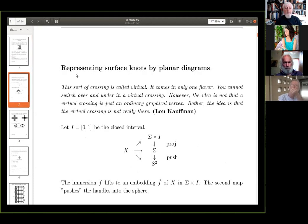Now, we can take a surface knot and represent it by a planar diagram, and I will quote Lou again. This sort of crossing is called virtual, it comes in only one flavor. You cannot switch over and under in a virtual crossing. However, the idea is not that a virtual crossing is just an ordinary graphical vertex. Rather, the idea is that the virtual crossing is not really there. Well, okay.